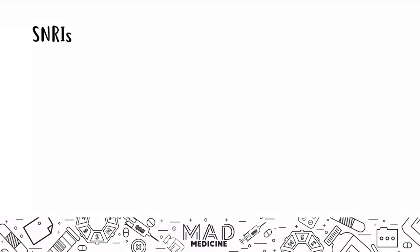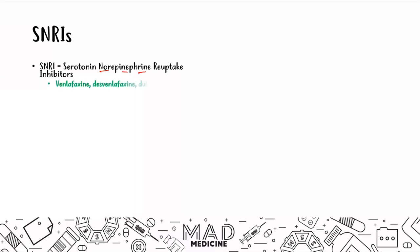The next and last drug class in this lecture is SNRIs. SNRIs are very similar to SSRIs — they function the same way, except that SNRIs are serotonin-norepinephrine reuptake inhibitors, blocking both serotonin and norepinephrine. The main SNRIs you need to know are venlafaxine, desvenlafaxine, duloxetine, levomilnacipran, and milnacipran.